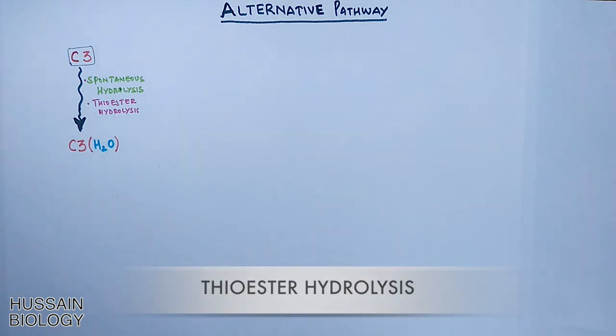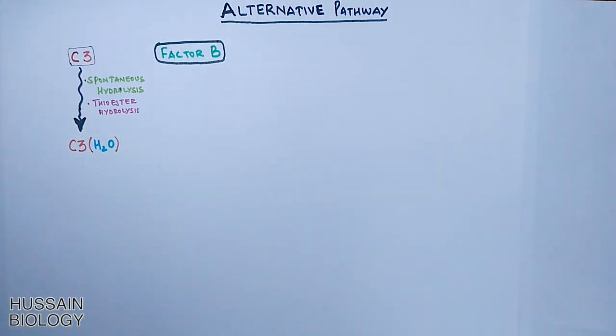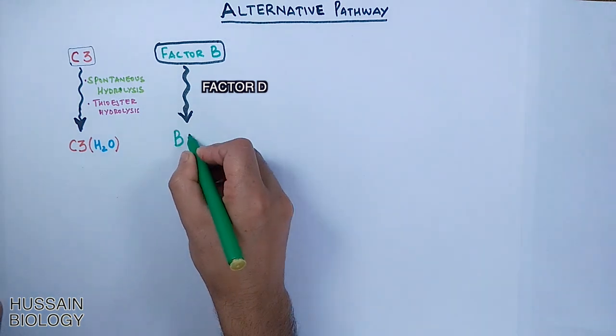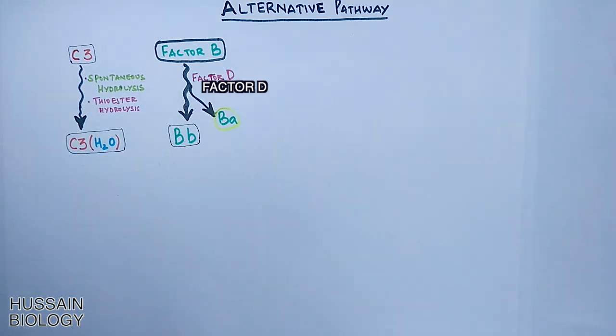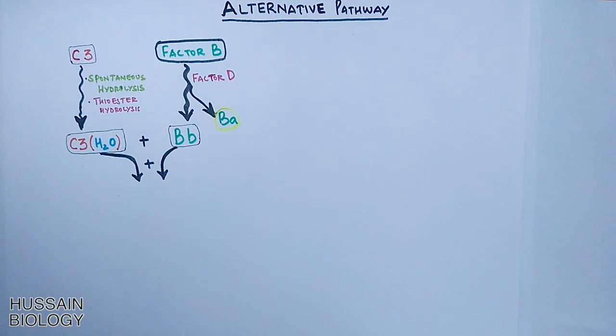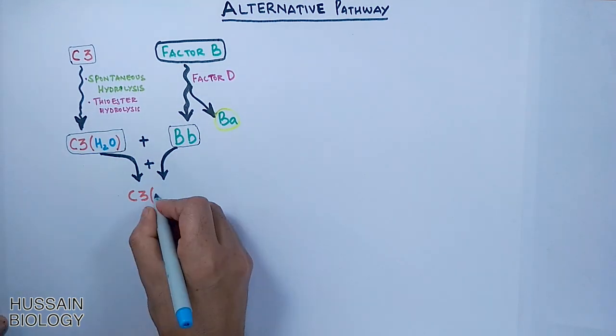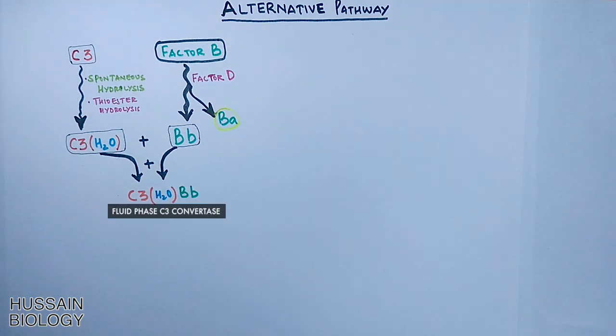Then we have Factor B in plasma, and this Factor B is acted upon by Factor D and converts it into two fragments: Bb and Ba. The Bb is the larger fragment and is active, and this Bb combines with C3(H2O) and we get the C3(H2O)Bb, and this complex molecule is called the fluid phase C3 convertase.